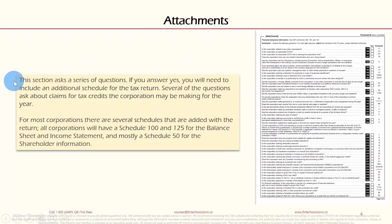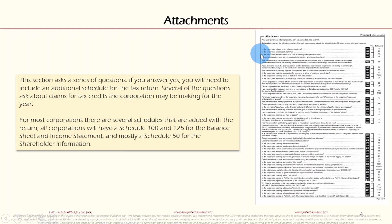Section 2 — Attachments — asks a series of yes/no questions. If you answer yes, you will need to include an additional schedule with the tax return. Several questions relate to claims for tax credits the corporation may be making for the year. All corporations will have a Schedule 100 and 125 for the balance sheet and income statement, and mostly a Schedule 50 for shareholder information.